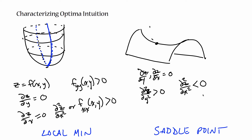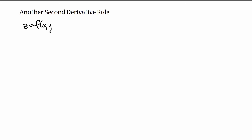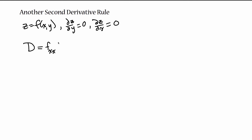That information gets combined into the actual second derivative rule. z is some function of x and y, and we already know the first partial derivatives are both zero, so it's a critical point. To determine whether it's a minimum, a maximum, or a saddle, we first define a quantity called D: it is the second partial derivative with respect to x at the point, multiplied by the second partial derivative with respect to y at the point, minus the mixed partial derivative with respect to x and y, squared.